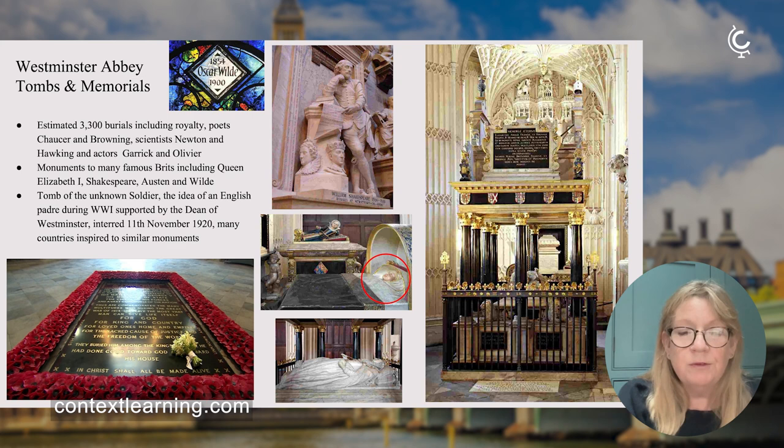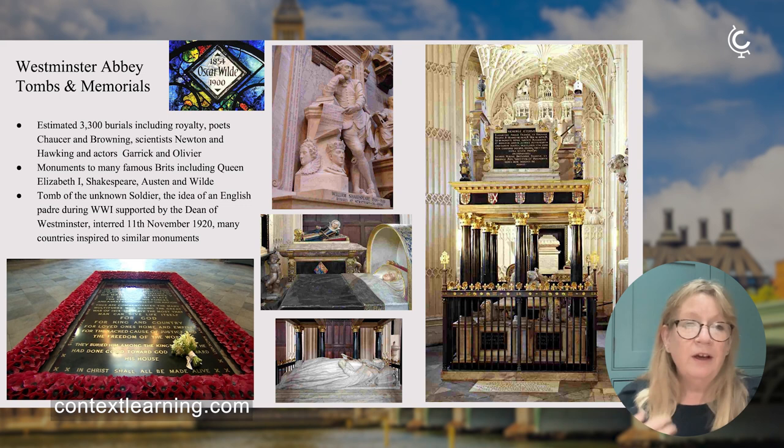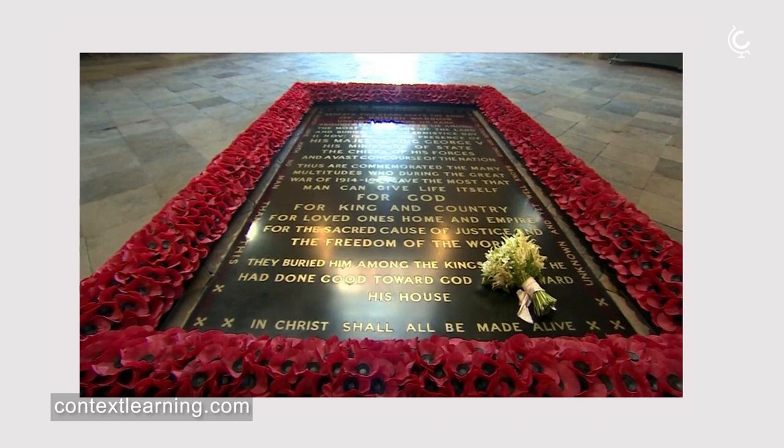Queen Elizabeth I lies on her great marble tomb. The most moving monument is of course the Unknown Soldier — an idea conceived by a padre during the First World War who had seen a cross simply marked 'soldier unknown.' With the permission of the Dean of Westminster, one of four unknown soldiers was selected and buried with great pomp and solemnity on the 11th of November 1920. The tomb is right by the west door, one of the first things you see entering the Abbey. Traditionally, royal brides leave their bouquets on the tomb of the Unknown Warrior — the one pictured here is Meghan Markle's.